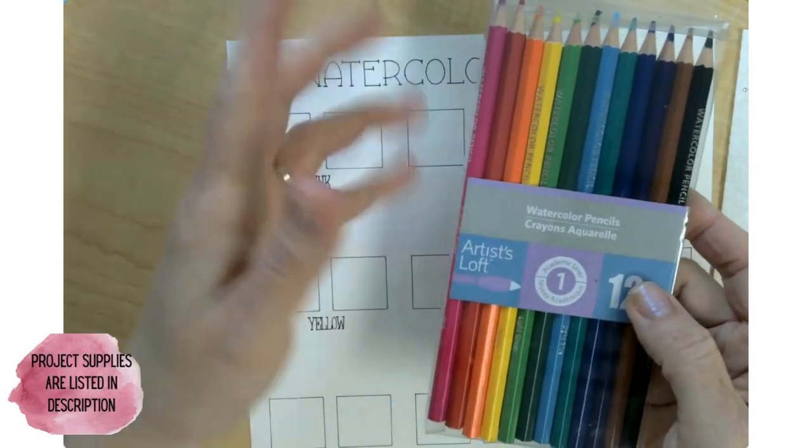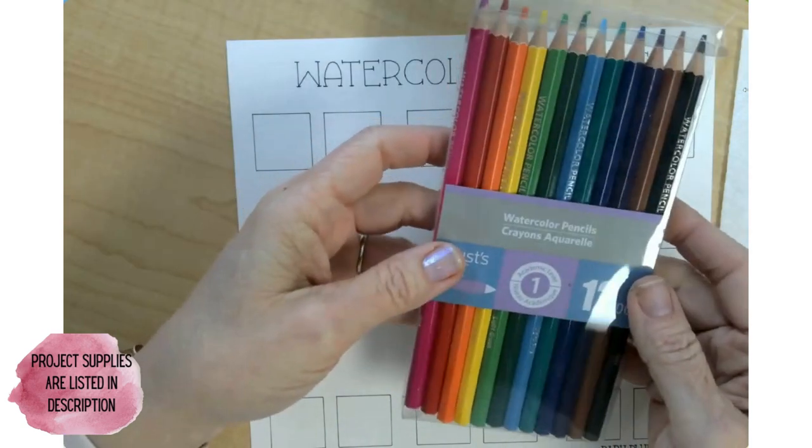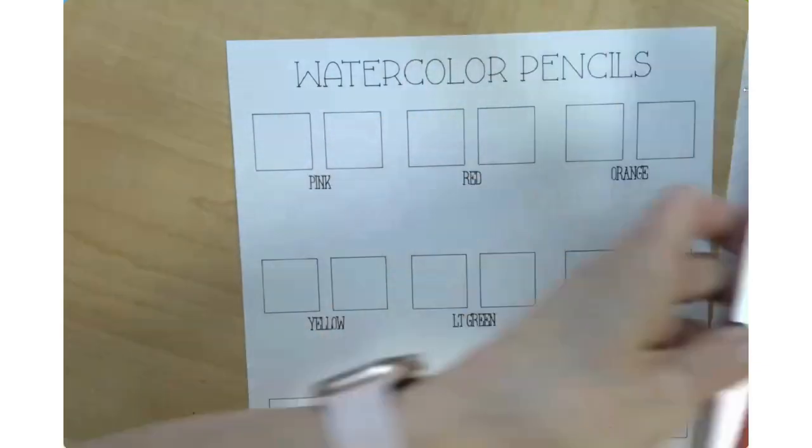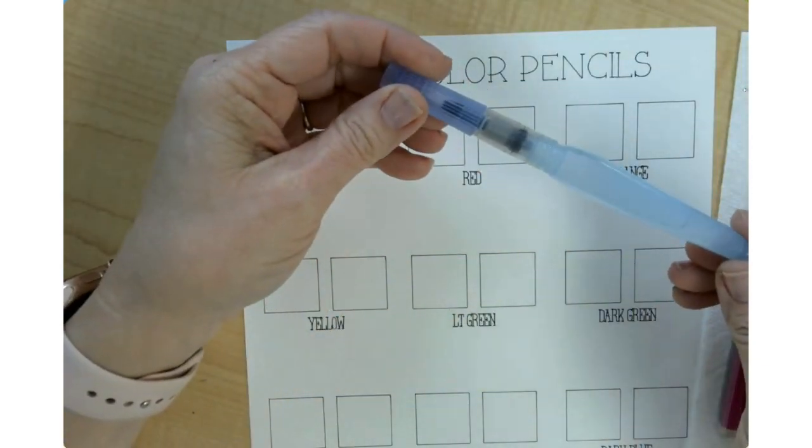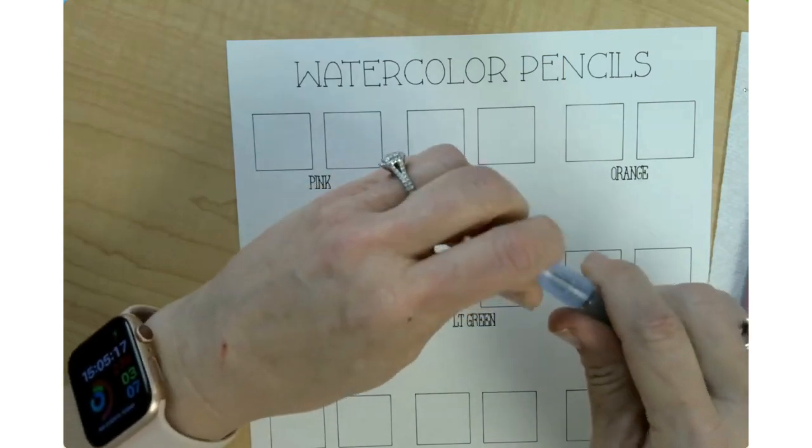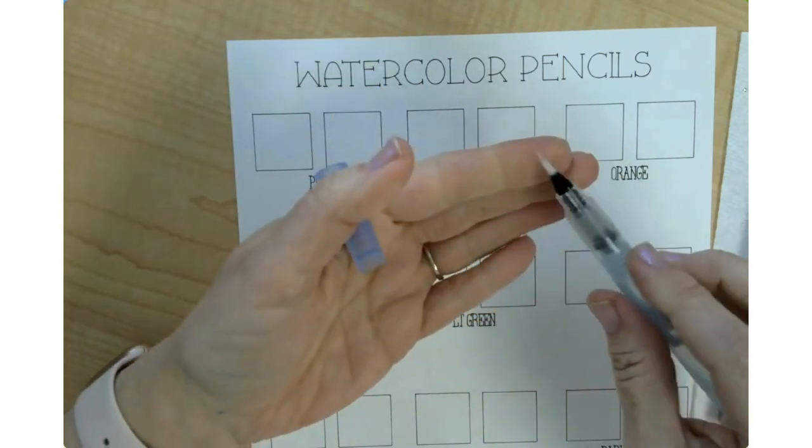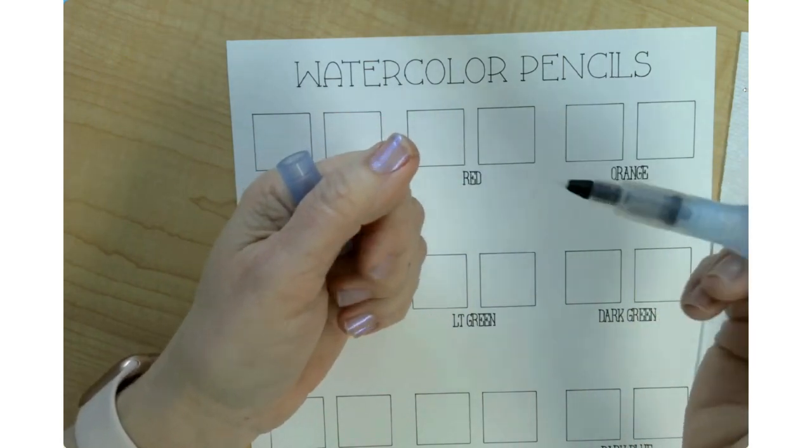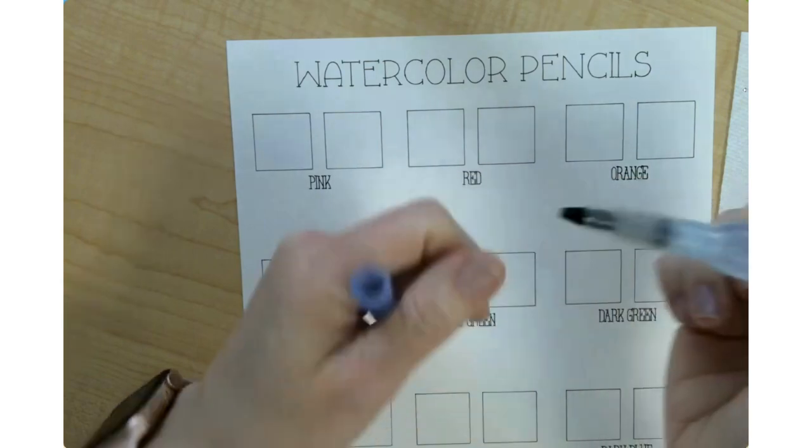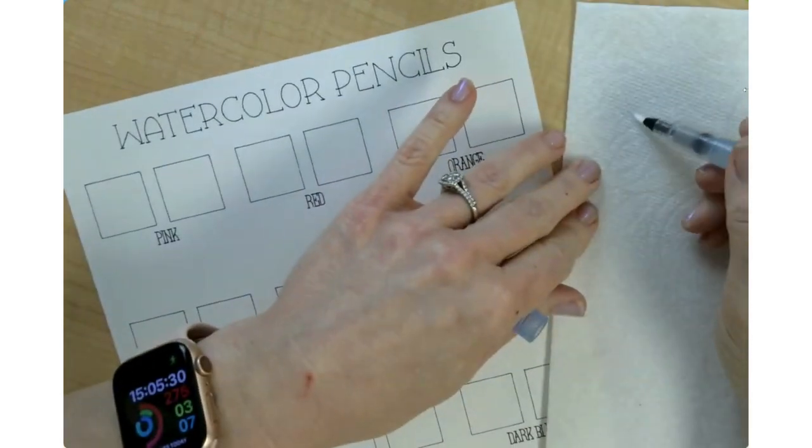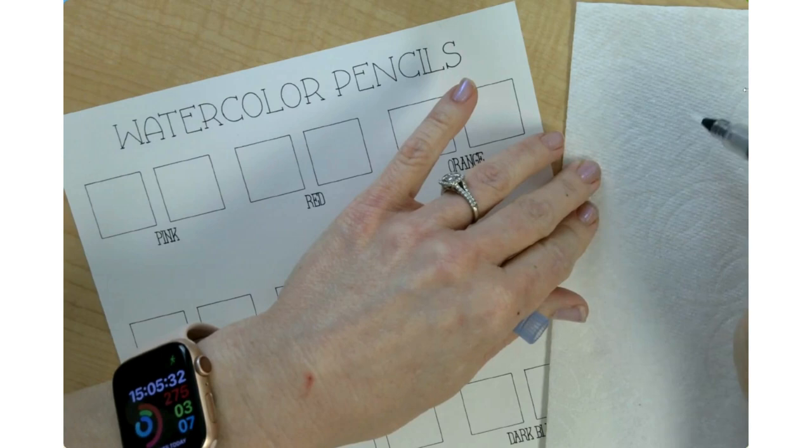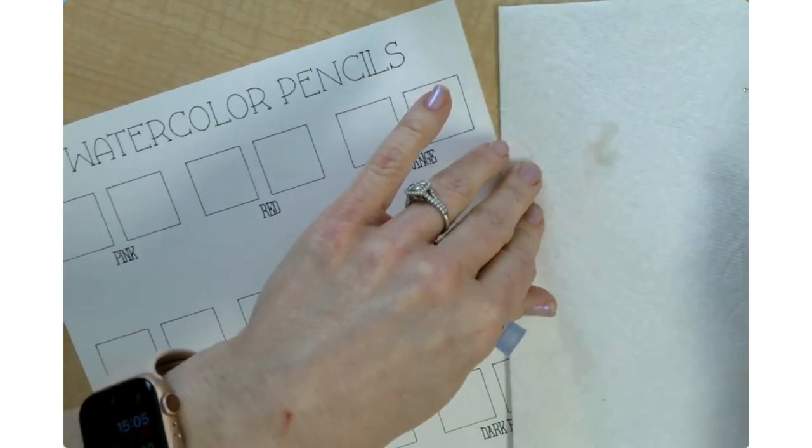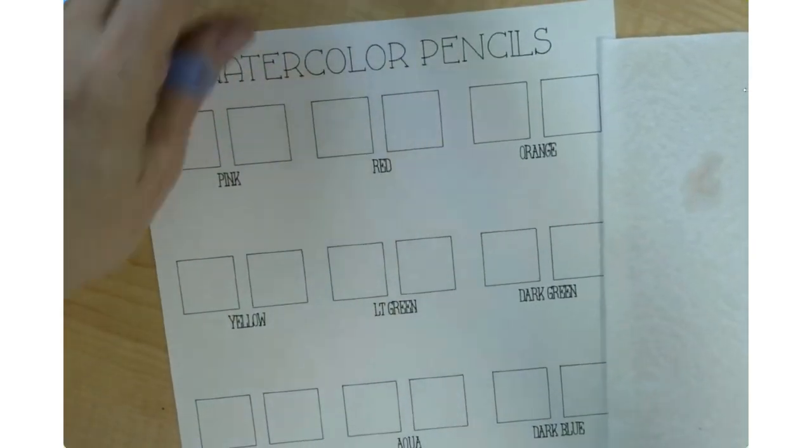Then I have bought some watercolor pencils. I actually just bought these at Michaels and I just wanted a basic set, so I have the 12 piece. I also bought a watercolor brush or water brush. It's like a pen felt tip marker, but you put water in here, and when you squeeze it, water comes out of the tip.